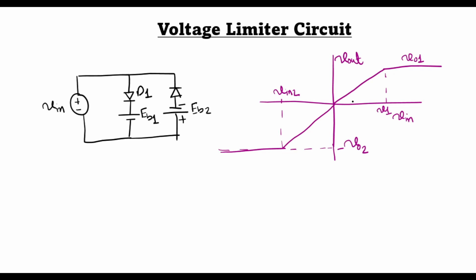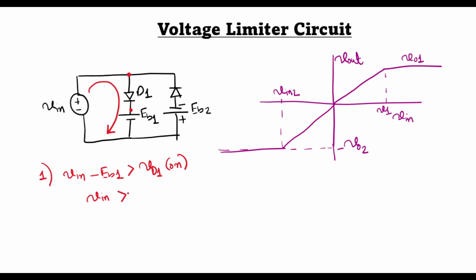Now let's understand how this circuit operates. The diode only conducts when it is forward biased. For D1 to conduct, its anode voltage should be greater than its cathode voltage by at least the diode on-drop. In other words, when VIN minus Eb1 is greater than the on-drop of diode D1, then D1 is forward biased and current will flow. This simplifies to VIN greater than Eb1 plus the on-drop of D1.